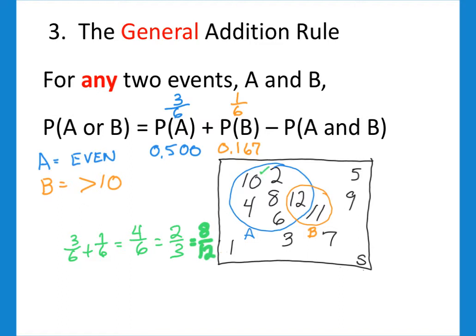So let's see, there's 1, 2, 3, 4, 5, 6, 7. Wait a minute, that's 1 too many. We have 1 too many. Why is that? We wound up with 1 too many because we counted all of the numbers that were even, that's 1, 2, 3, 4, 5, 6. And then we counted all of the numbers that were greater than 10. And did you see what happened to the 12? Well, we counted it twice.